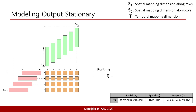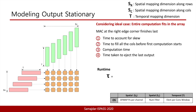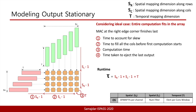Here we describe the modeling for output stationary mapping. In this case each MAC unit is responsible for generating one output pixel by computing and reducing the required partial sums. The parameters mapped along the spatial and temporal dimensions are shown in the table. We consider the ideal case where the entire computation fits into the array. The operand matrices are fed from the top and left edges and are skewed to account for timing in a store-and-forward setting. The bottom-right MAC finishes last and is therefore in the critical path. To calculate compute time we consider four steps: SR-1 cycles for the first data to arrive at the bottom row edge, SC-1 cycles to move to the bottom-right MAC, T cycles for generating and reducing partial sums, and finally SR cycles for the last element to eject from the array.